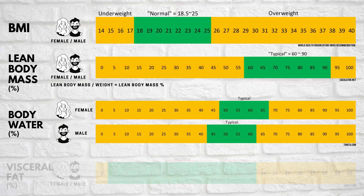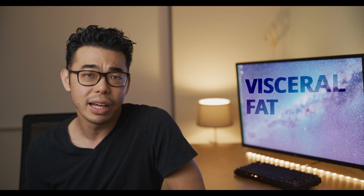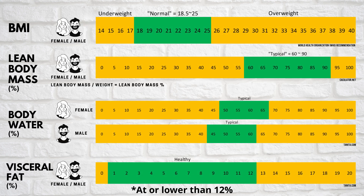Let's go to body water percentage. The recommendation according to Tanita.com is to shoot for about 50 to 65 percent for females and 45 to 60 percent for males. Next up is visceral fat. Visceral fat is located in the core of the abdominal area, surrounding and protecting vital organs. Tanita.com notes that if you're under 12 percent you're considered to be in the healthy zone.